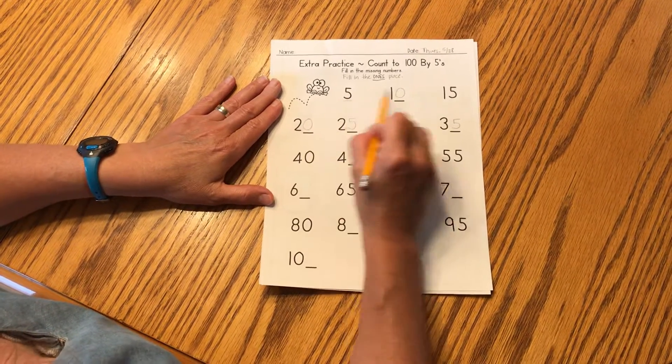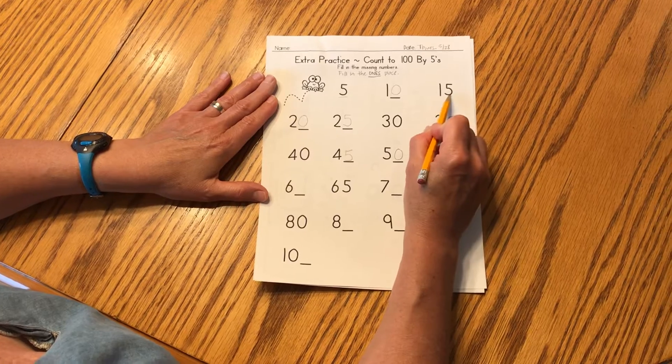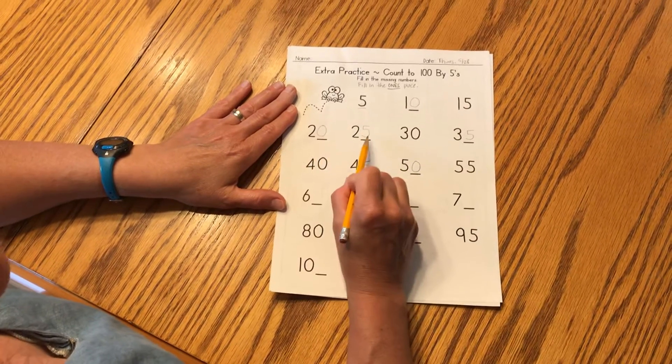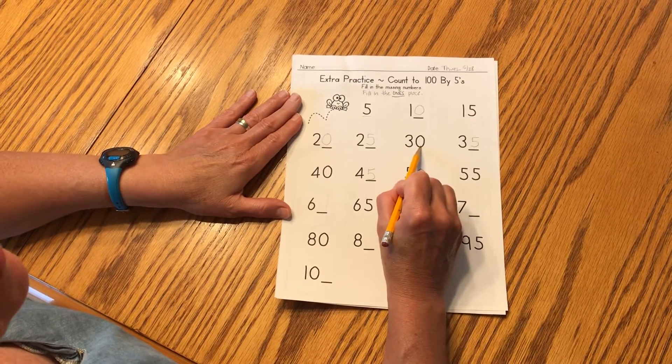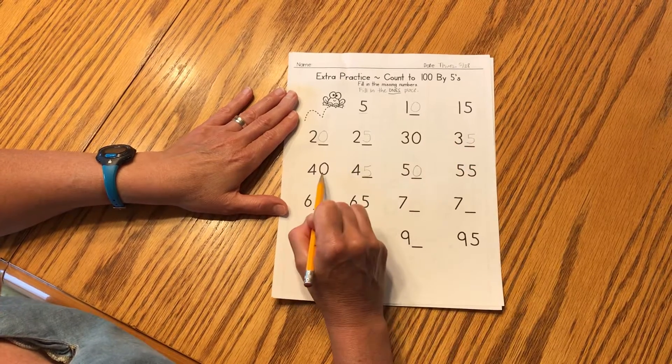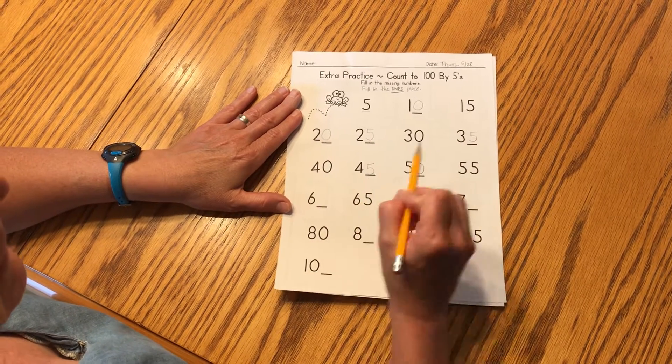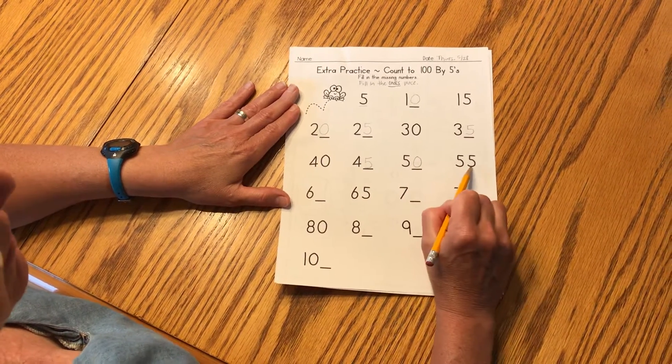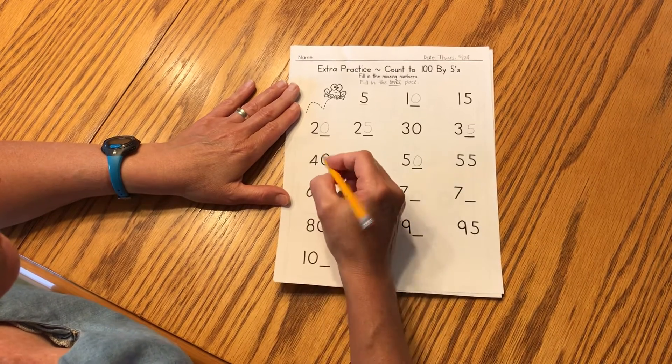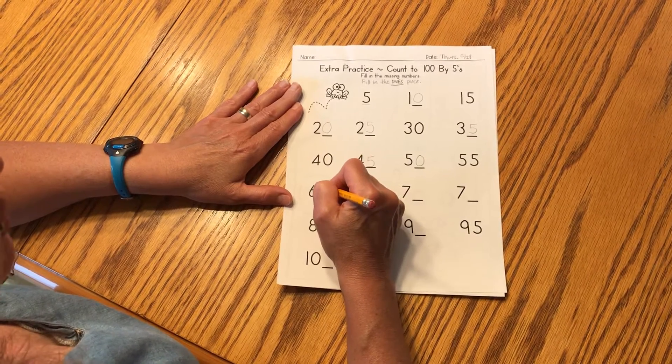Our ones place is going five, then a zero, then a five, then a zero, then a five, then a zero, then a five, zero, five, zero, five. What comes next? You said zero, you're right.